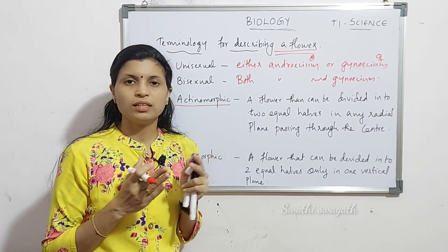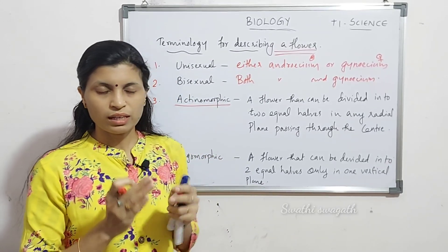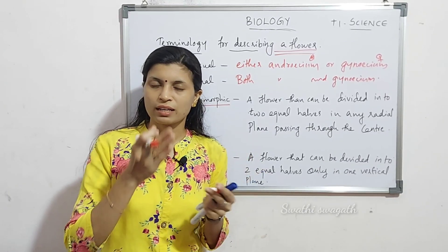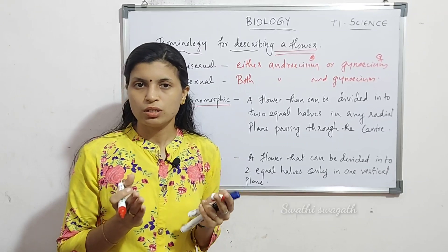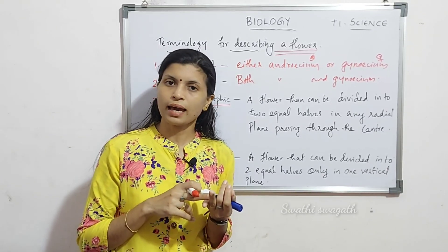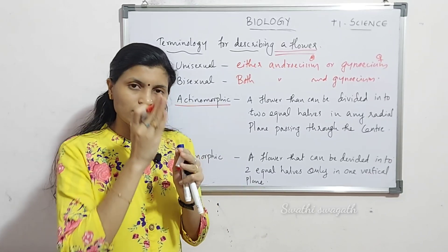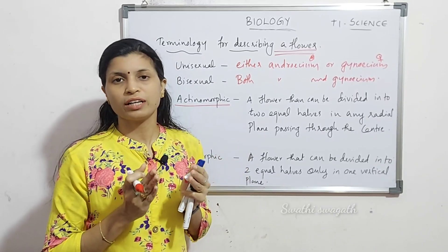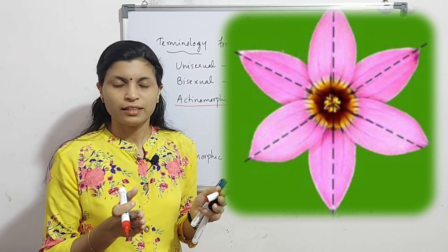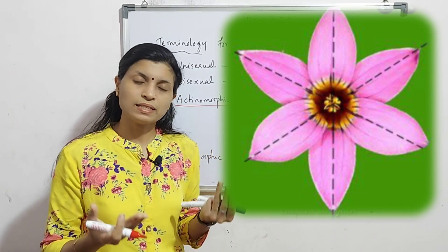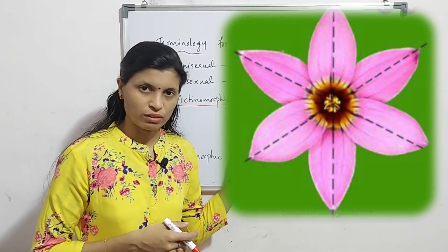A flower that can be divided into two equal halves — cutting through any floral whorl, that is corolla, calyx, androecium, gynoecium — is called an actinomorphic flower.